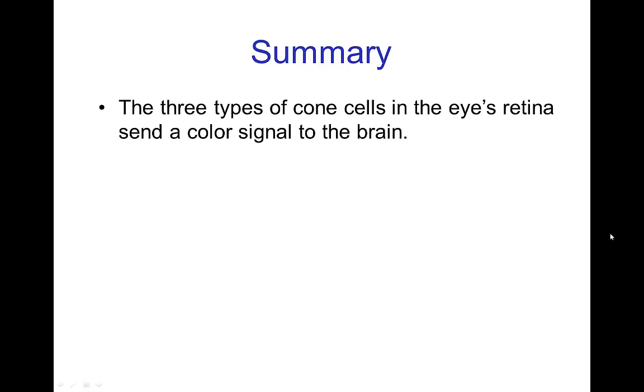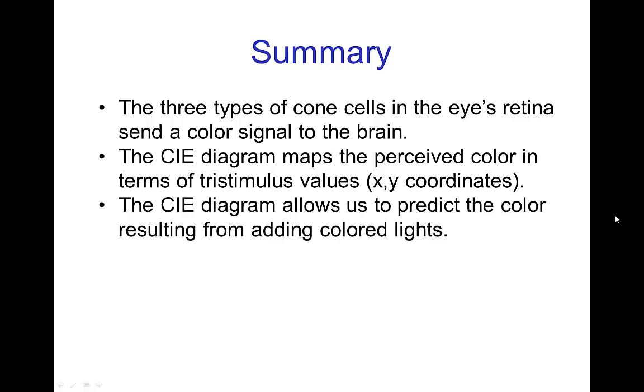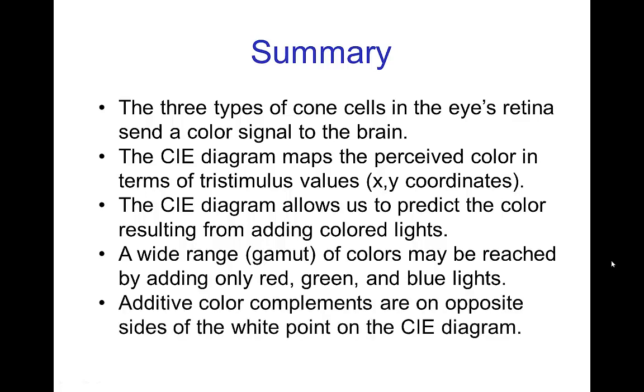So in summary, there's three types of cone cells in the retina of the eye, and they send a color signal to the brain. The CIE diagram maps the perceived color in terms of the tri-stimulus values, basically the x-coordinate being the stimulation of the red cones, and the y-coordinate being the stimulation of the green cones. This diagram allows us to predict the color that results from adding colored lights. There's a wide range of colors called the gamut, the gamut of colors that you can reach using only red light, green light, and blue light. And finally, additive color complements are the colors that are on opposite sides of the white point on the CIE diagram.